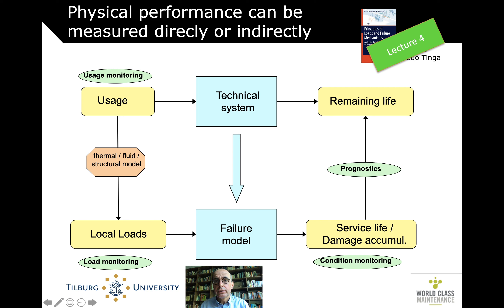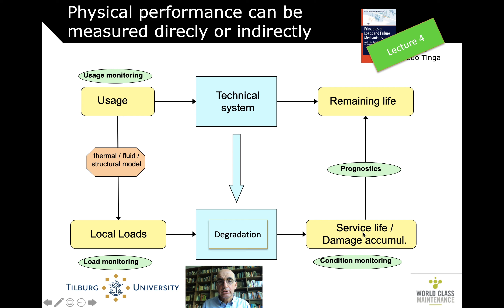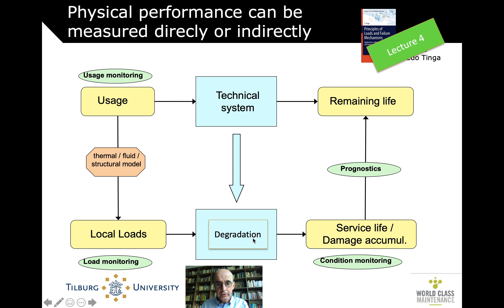We saw this excellent slide also in Lecture 4. It summarizes much of the thinking behind degradation models, showing that data can be based on usage, on the load, or on the actual condition itself. What I don't like about this picture is that it says 'failure model' in the bottom center — it's not the model, because the model is what you use to make sense of what's actually happening. What's really happening in the technical system is that because of local loads, it degrades and accumulates damage.